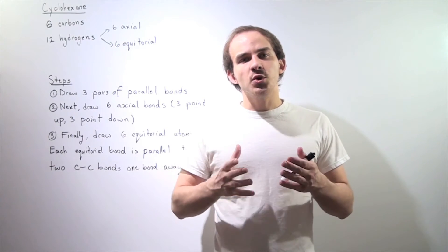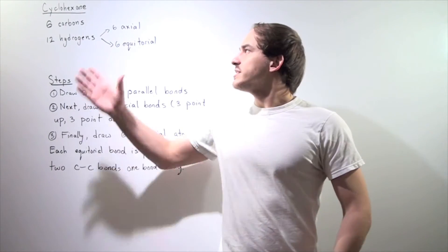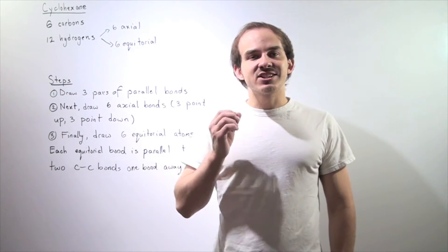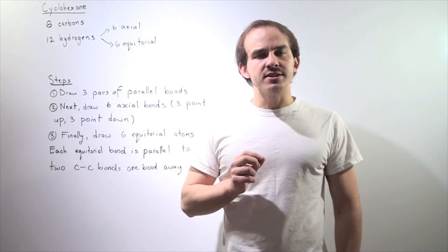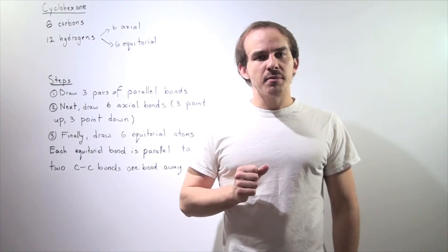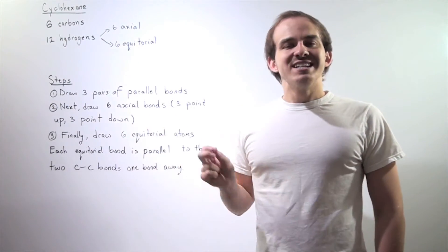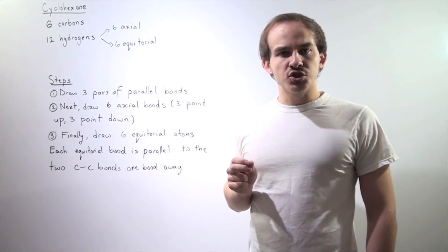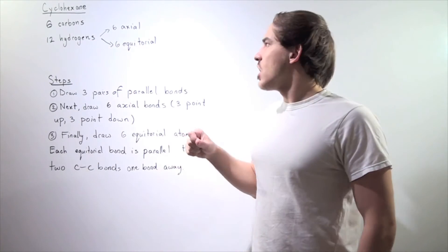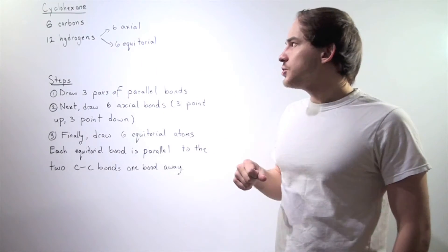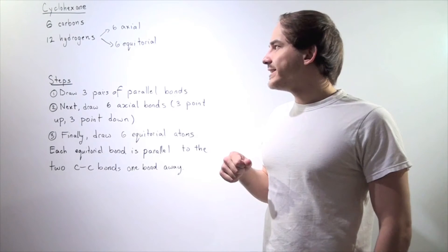In this lecture, I will show you how to draw the chair conformation for cyclohexane, a six-carbon ring. It's composed of six carbons, so that means we have six carbon-carbon bonds, and we also have 12 hydrogen atoms. Six of those 12 are in the axial position, and the other six are in the equatorial position. Axial simply means pointing up or pointing down.